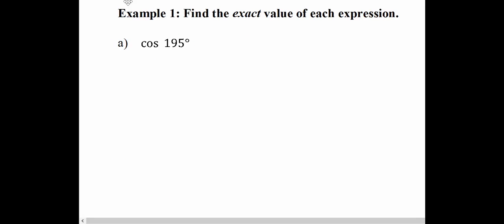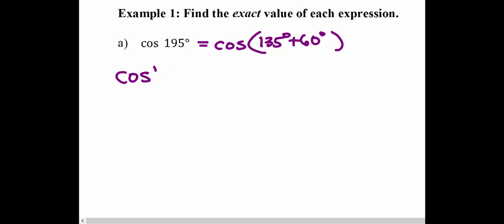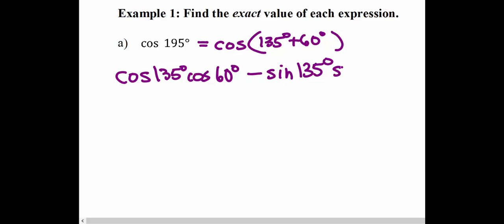We want to find the exact value of cosine of 195 degrees without using a calculator. We are not familiar with 195 degrees, but we are familiar with angles that might add or subtract to give 195 degrees. Let's break this up into two familiar angles: instead of writing 195 degrees, let's think of it as 135 degrees plus 60 degrees. Those are two angles whose sine and cosine values we know. Using our cosine identity for a sum: cosine of 135 times cosine of 60, minus sine of 135 times sine of 60.